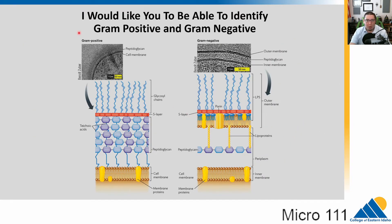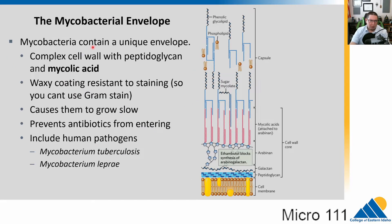You should be able to tell the difference between gram-positive and gram-negative if given an image. Other bacteria don't gram stain regularly — they can have different membrane and wall constructions.